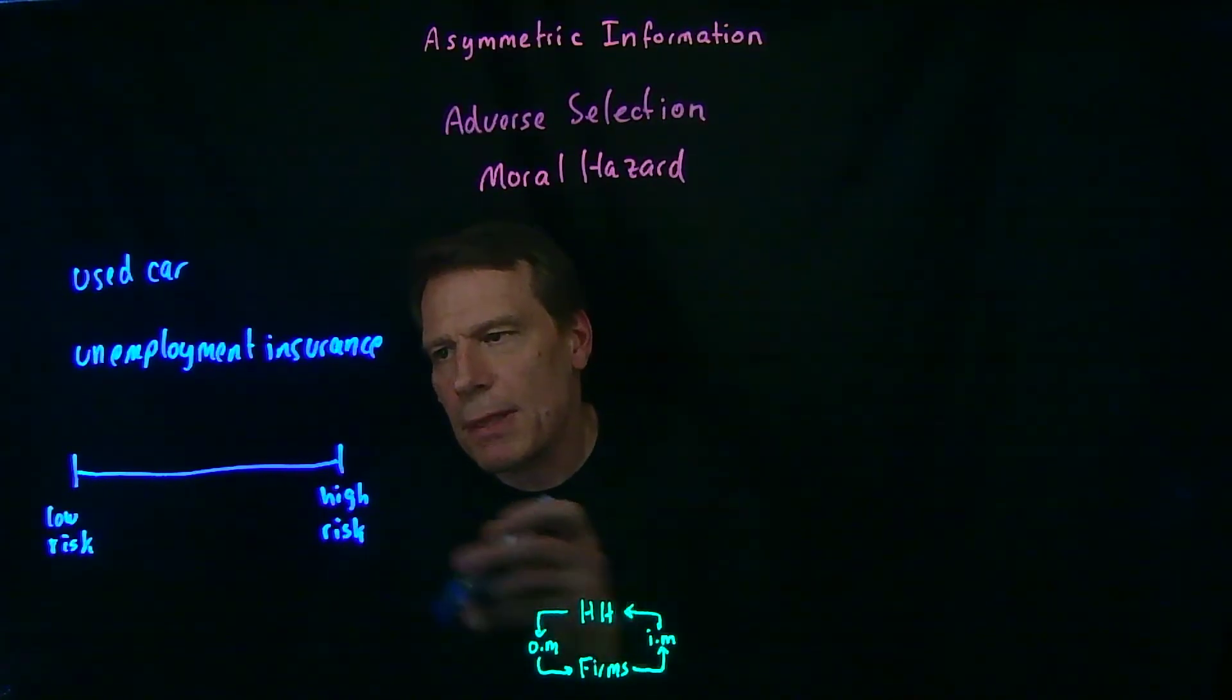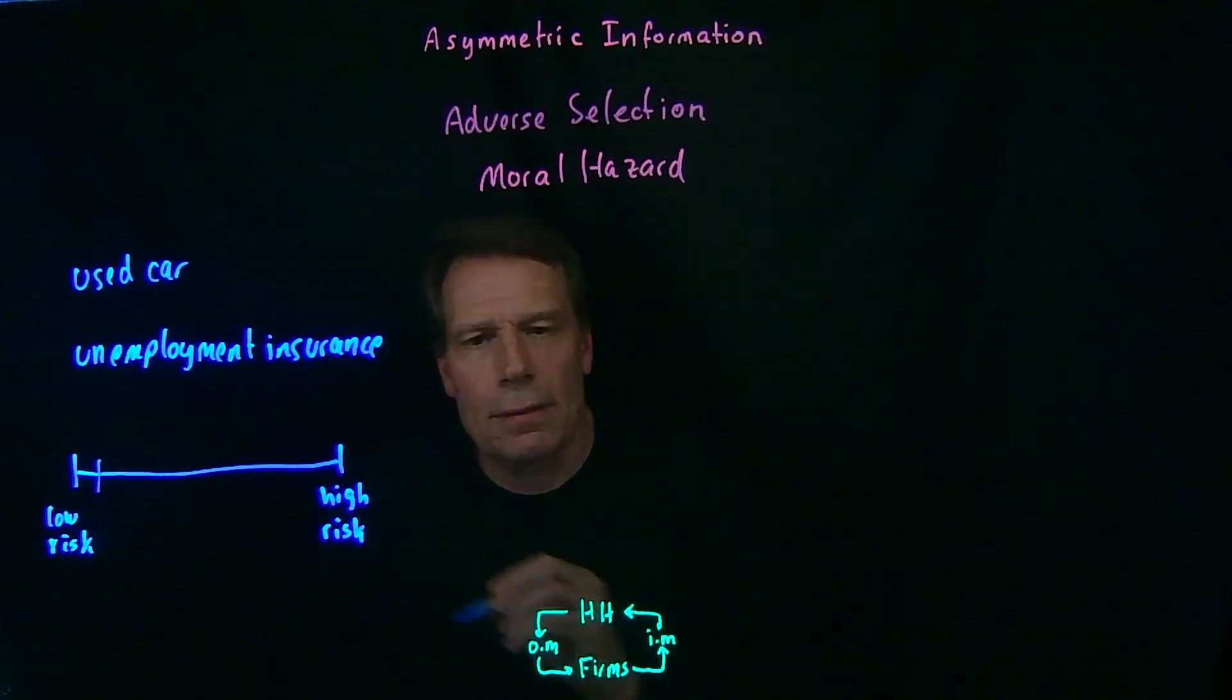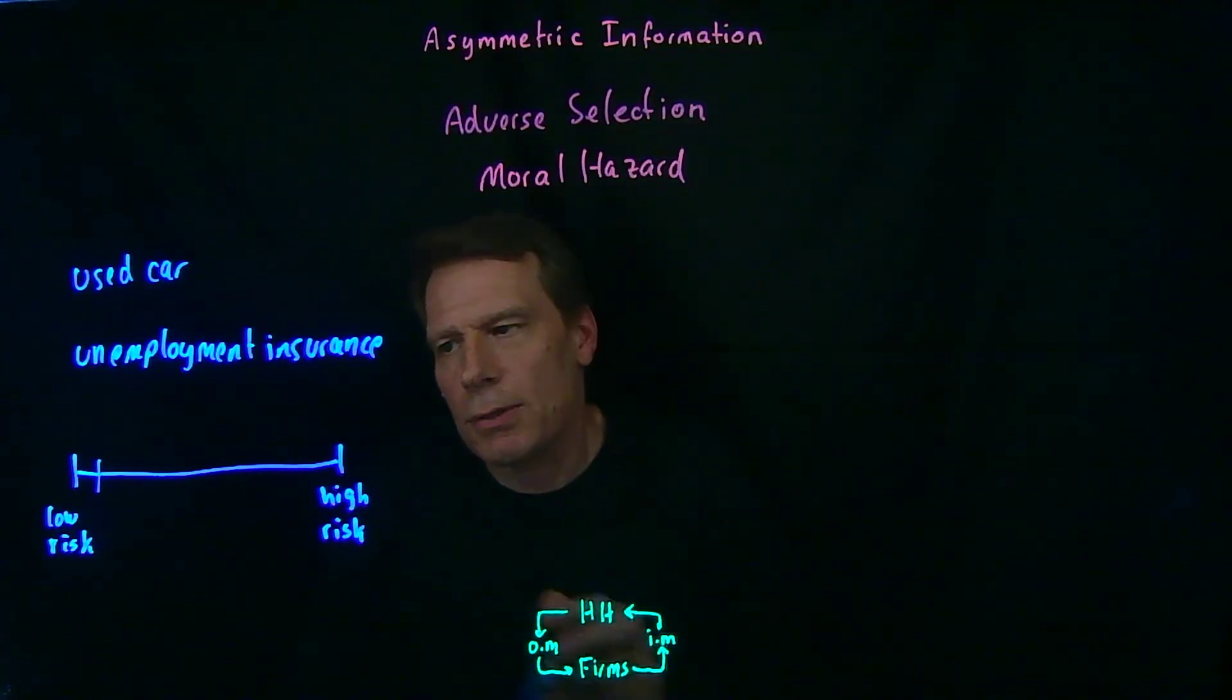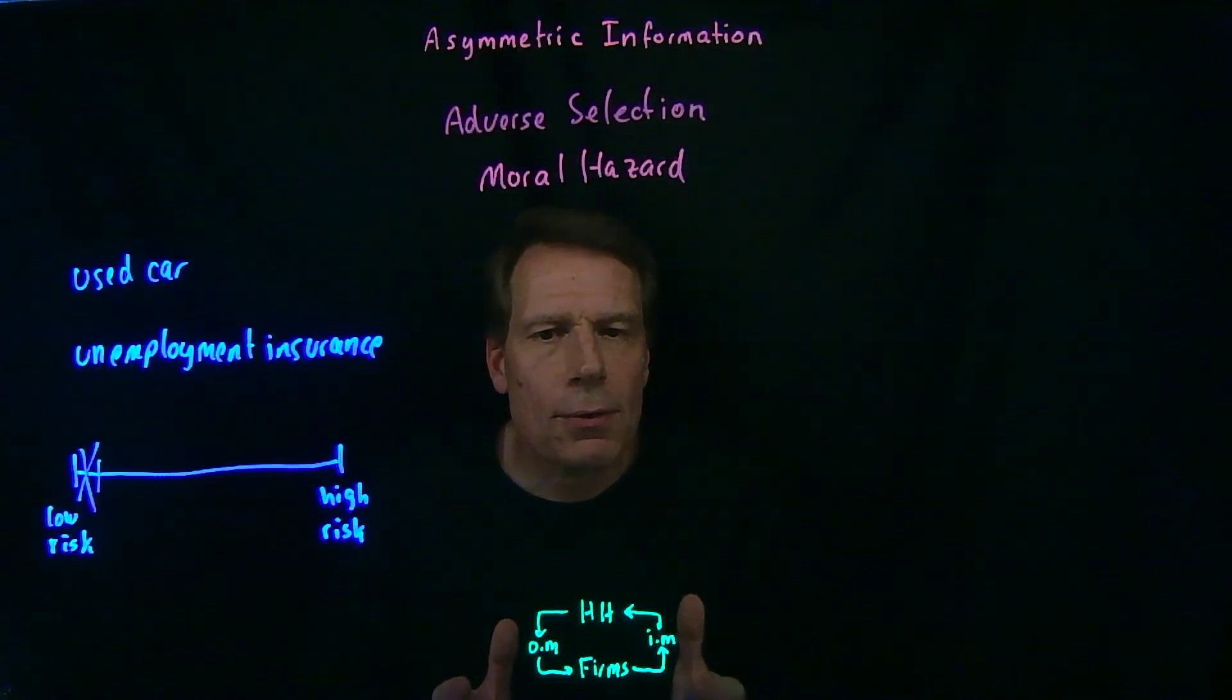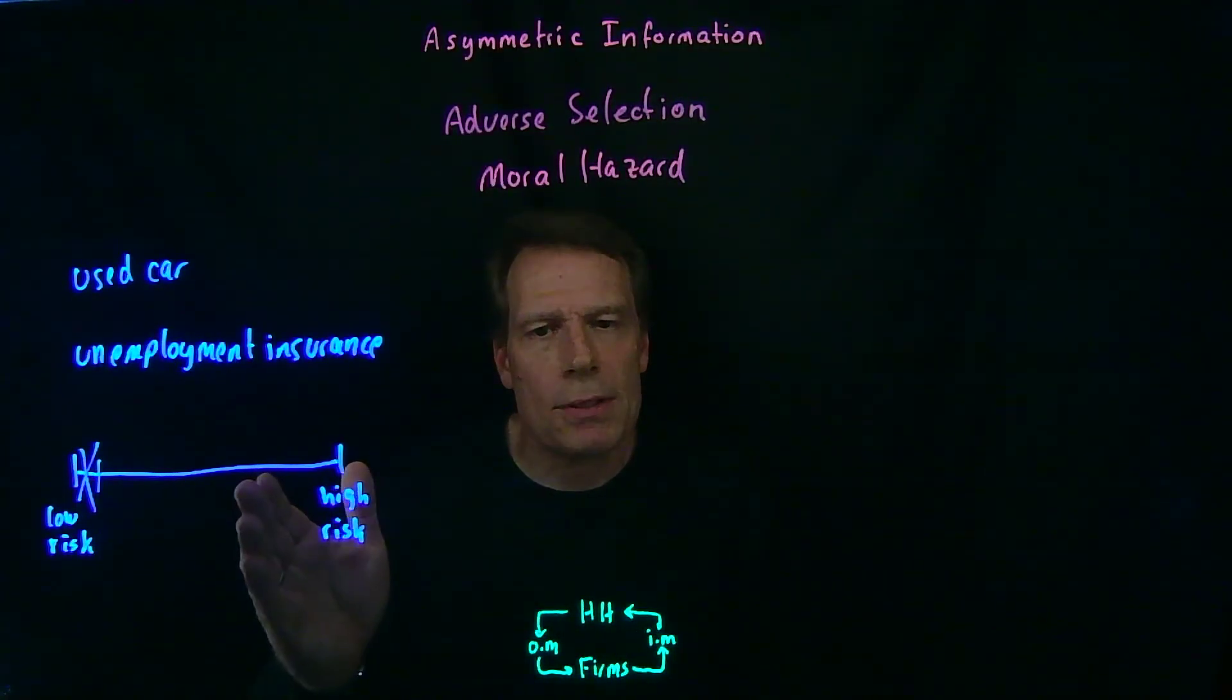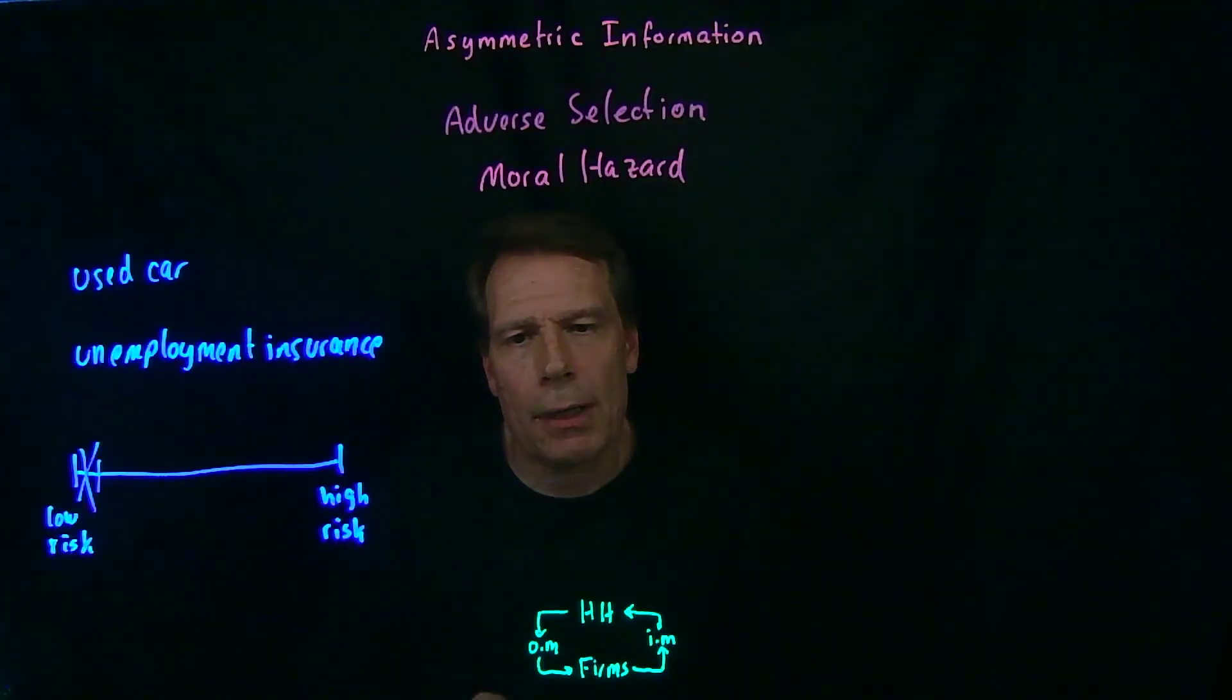So there's a segment of low-risk employees who will not be interested in buying unemployment insurance, and so they're going to drop out of the market. That's going to create adverse selection of higher-risk people into the insurance market. As a result, the insurance companies are going to have to charge a higher premium to be able to afford to pay out the benefits they're going to owe to those who become unemployed.